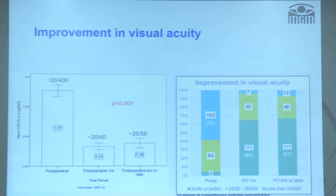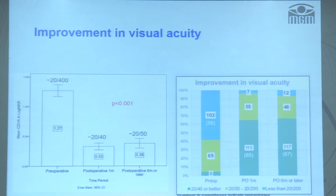Mean visual acuity improved from 1.27 logMAR (approximately 20/400) preoperatively to 20/40 at one month, and remained around 20/50 at six months. The improvement from preoperative to both the one-month and six-month follow-ups was statistically significant, though the difference between one month and six months was not. Around 58% of patients had visual acuity worse than 20/200 before surgery, which improved to about 65% having corrected visual acuity of 20/40 after surgery.